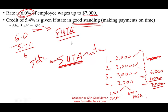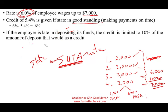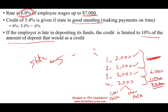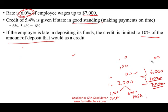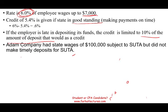What happens if you are late — not in good standing — submitting your deposit to the state government? Then your credit is limited to 90% of the amount that would have been credited, meaning the federal government will not give you the full 5.4% credit. Let's take a look at an example to see how this works.